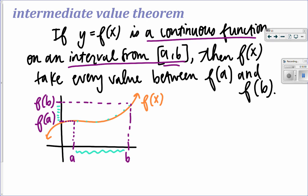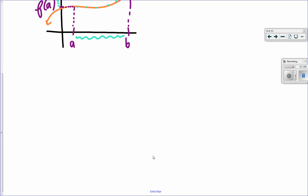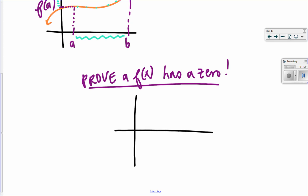But why is this helpful? Well, one of the biggest things that we can use the intermediate value theorem for is to prove a function has a zero. Why would we be able to do this?